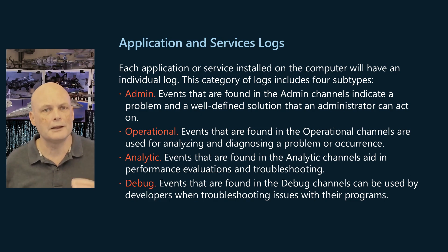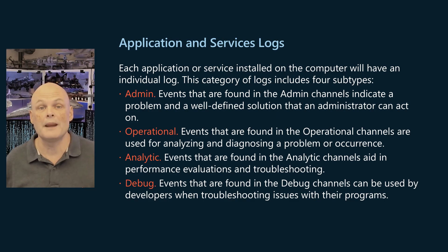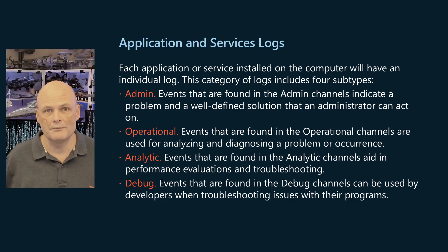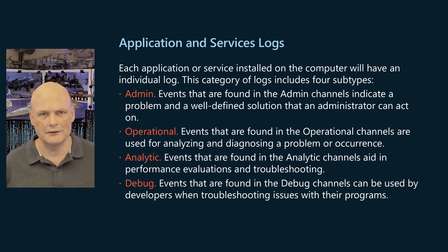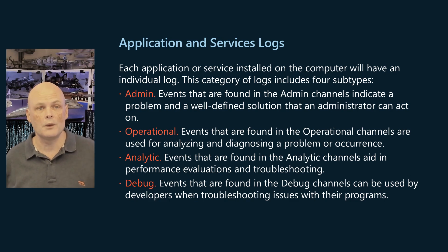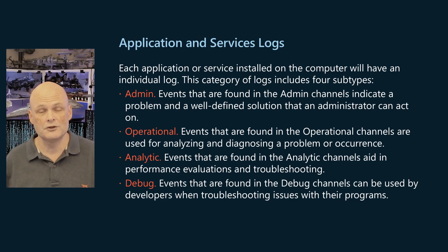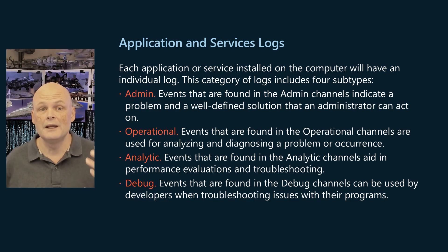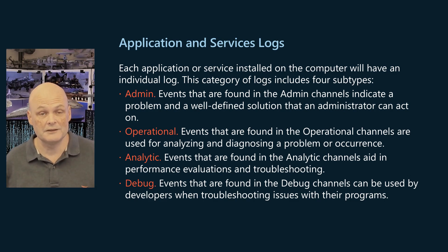The admin logs record events in admin channels and indicate a problem and a well-defined solution that you can act on. An example of an admin event is when an application fails to connect to a printer. These events are either well-documented or have a message associated with them that'll give you direct instructions — well, should at least, unless you have to ask AI to solve it for you — of what you need to do to rectify the problem.